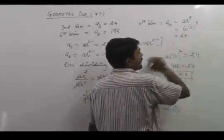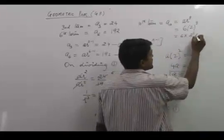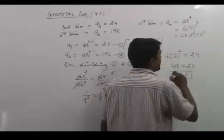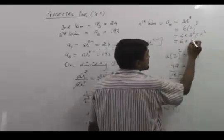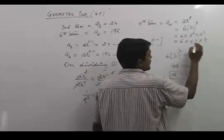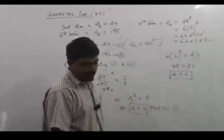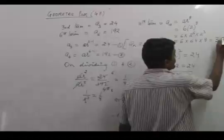6 multiplied by 2 to the 9th. We can write this as 2 to the 6th times 2 to the 3rd. 2 to the 6th is 64 and 2 to the 3rd is 8. When we multiply, we get the answer as 3072.